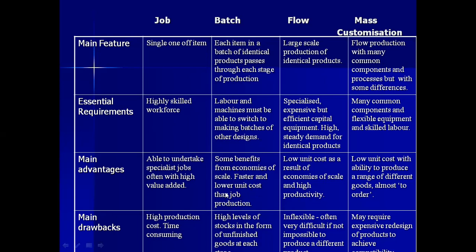Batch production has faster production and lower unit cost than job production. Lower unit cost is achieved through economies of scale, and it is faster because machines are used. In job production there is very little machine use — think of a barber or hairdresser where very little machinery is involved — so the majority of work is done by people.